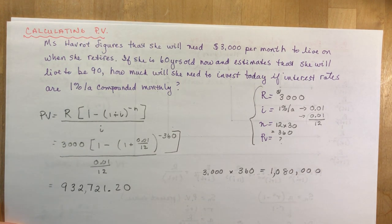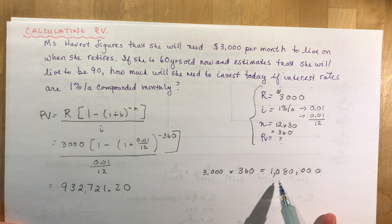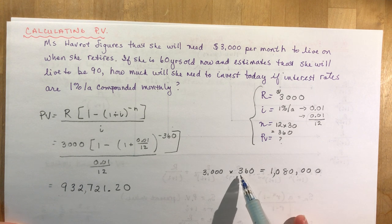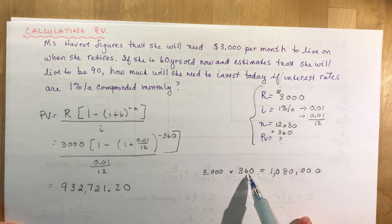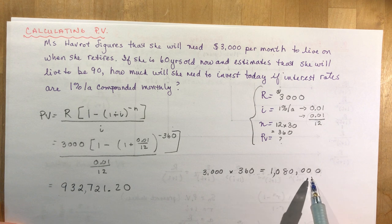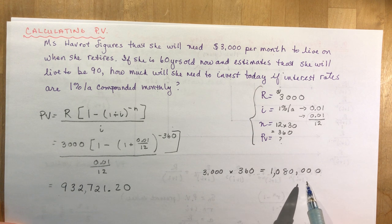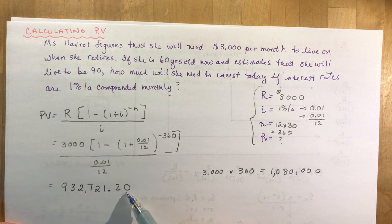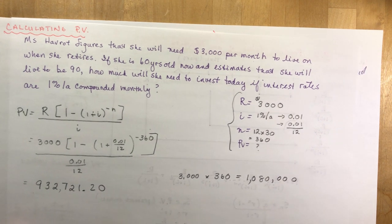So you get away with putting in a little bit less than you would need to if you stuck this money under your mattress and took out $3,000 every month. Because you're gaining interest on this present value, that's why this amount should be smaller than this one.